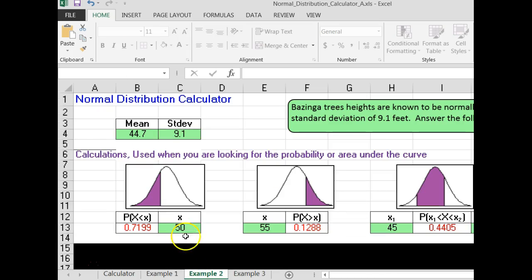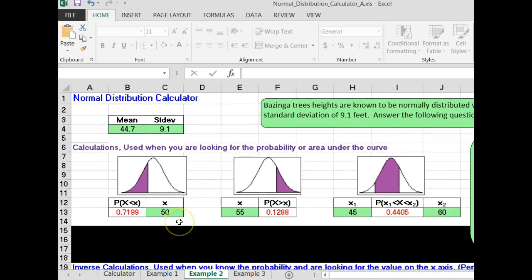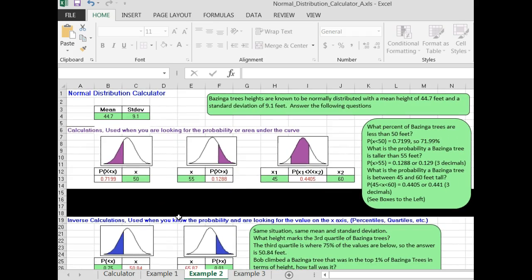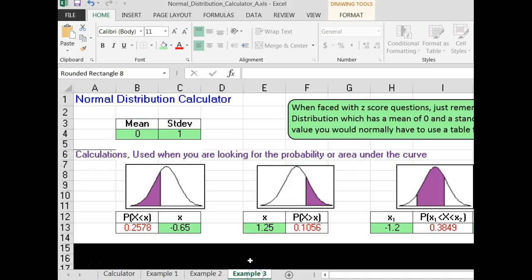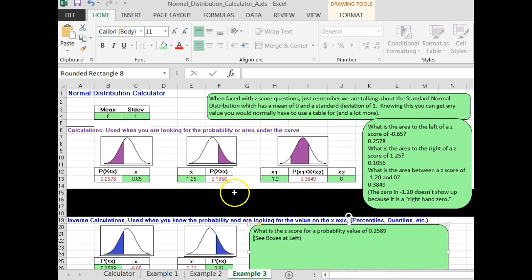Example 2. I've got another example for a normal distribution. Bazinga trees have heights that are known to be normally distributed with a mean height. I've got some examples here. Finally, in example 3, I've got a z-score type situation.